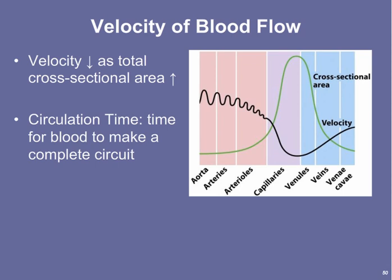Velocity is the speed of blood, and it decreases as the total cross-sectional area of the blood vessel type increases. Capillaries have very tiny individual lumens but, because there are so many of them, represent the greatest overall cross-sectional area of any blood vessel type. As a result, blood flows slowest through the capillaries, next slowest through the veins, and fastest through the arteries. This is like covering the opening of a garden hose with your thumb — reducing the opening increases velocity and pressure.